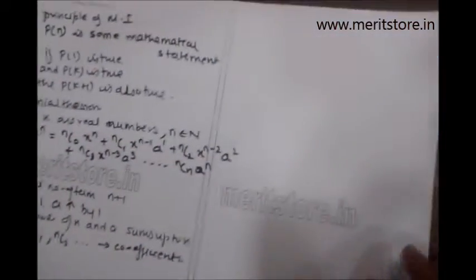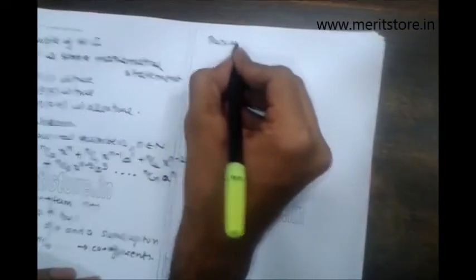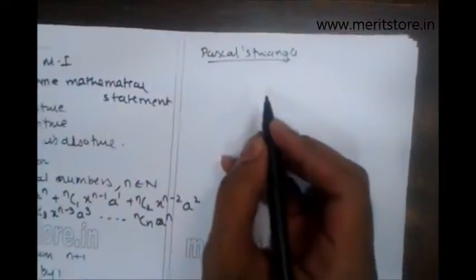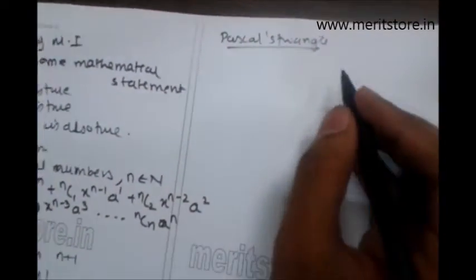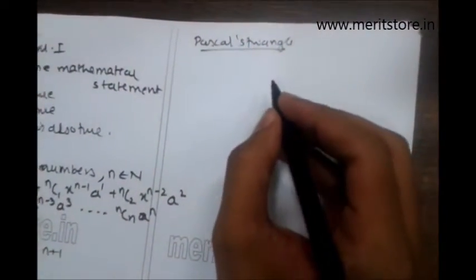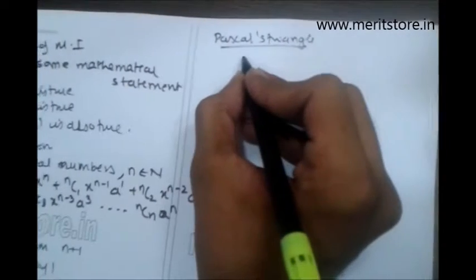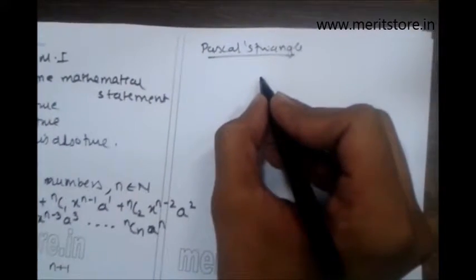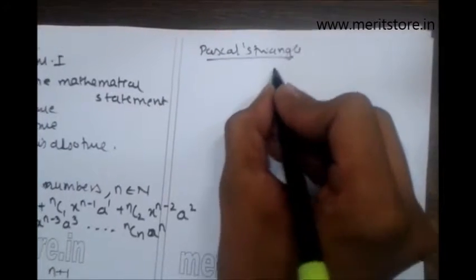Through this general formula there is something called Pascal's triangle that has been derived. Pascal's triangle is generally used when you have smaller values of n. For example, if I have n as 0, anything raised to 0 is always 1.